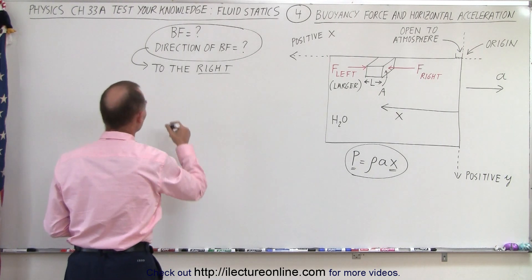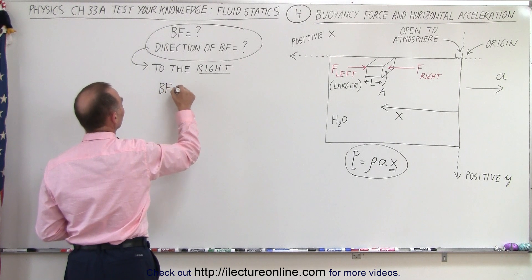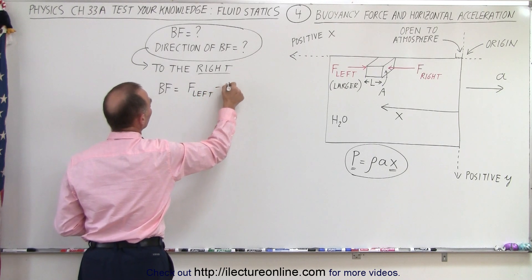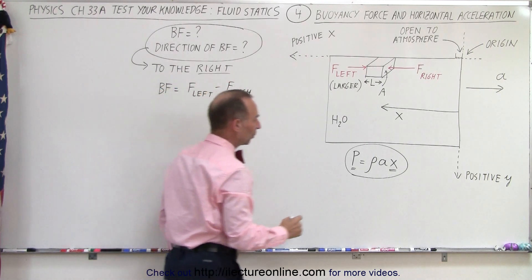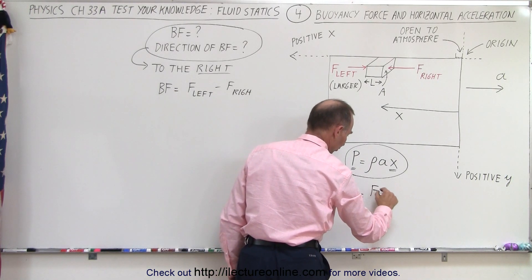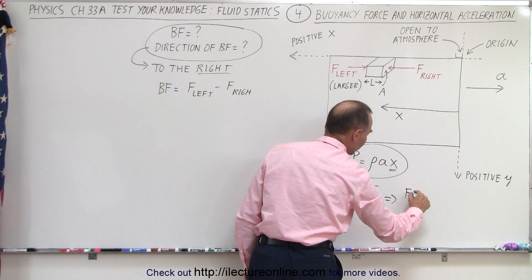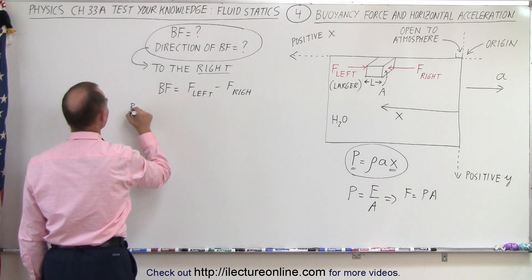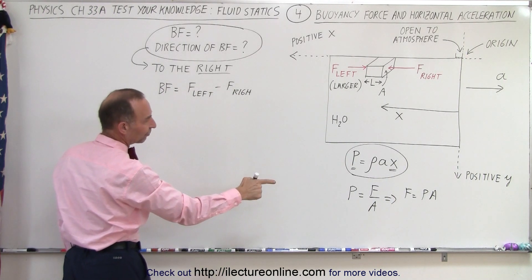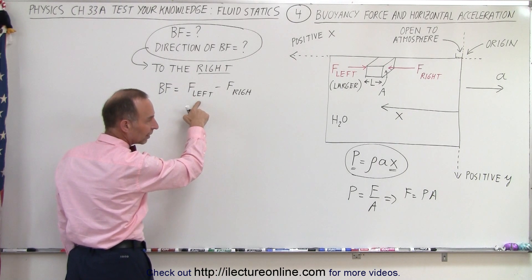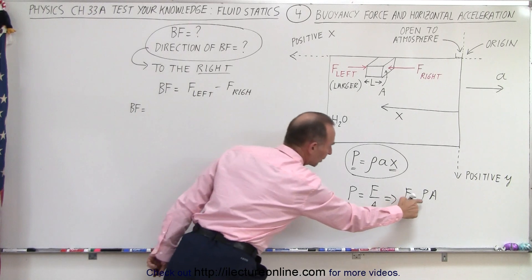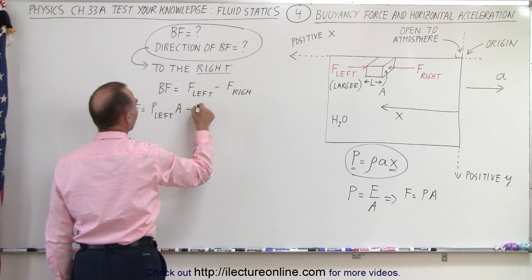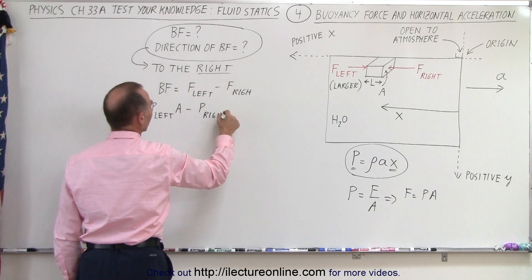Now we're ready to find the buoyancy force. By definition, the buoyancy force equals the larger force (force on the left) minus the force on the right. Since pressure equals force divided by area, the force equals pressure times area. Therefore, the buoyancy force equals the pressure on the left times the area, minus the pressure on the right times the area.